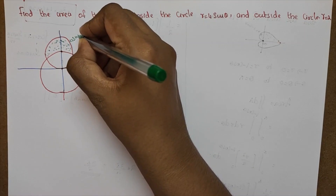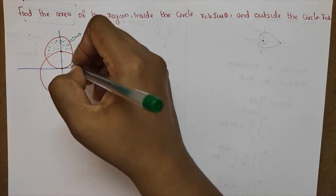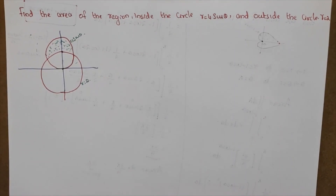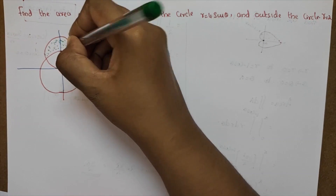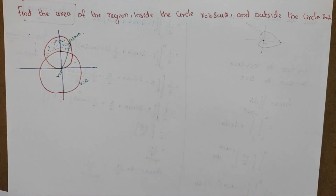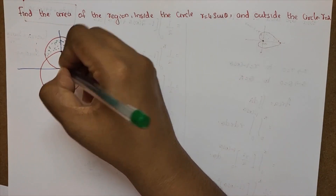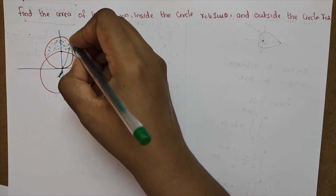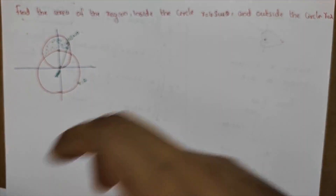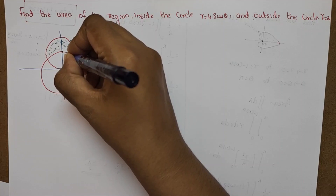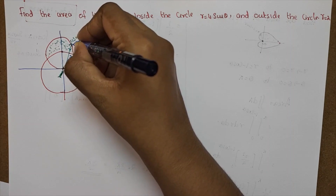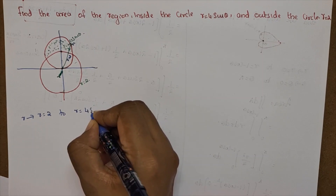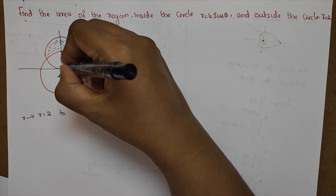Inside the circle r equal to 4 sin theta, outside the circle r equal to 2. R equal to 4 sin theta, r equal to 2 — that is the region. This is the original line r equal to 0, r equal to a sin theta. So r equal to 2 and r equal to 4 sin theta — this is the original line.